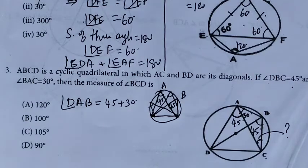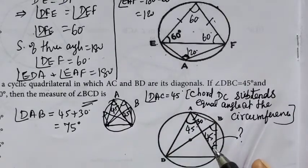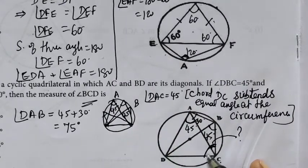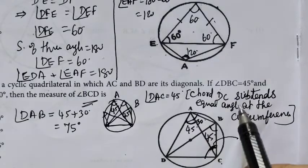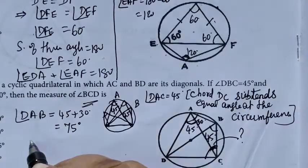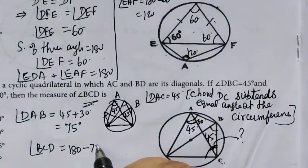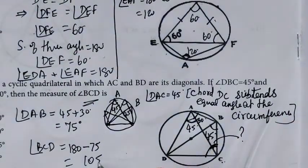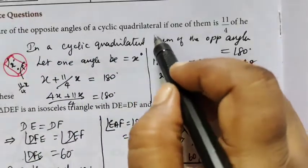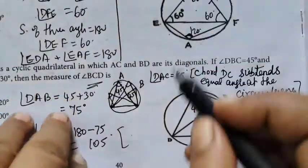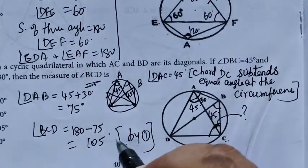This is DAC. The question asks for BCD. Using the property that the sum of opposite angles in a cyclic quadrilateral is 180 degrees: BCD equals 180 minus 75, which equals 105.